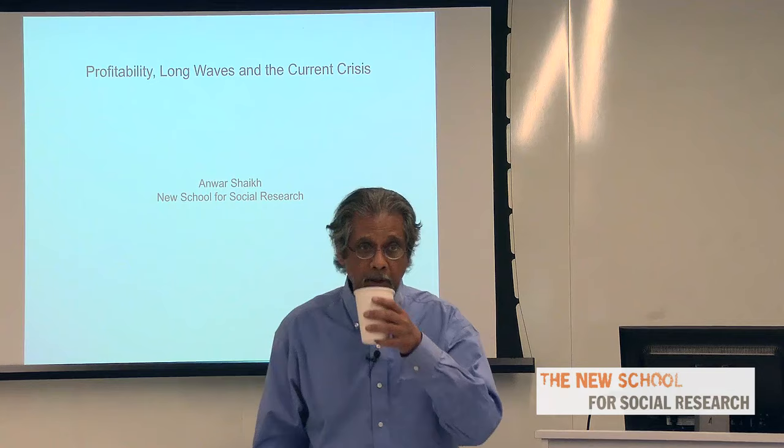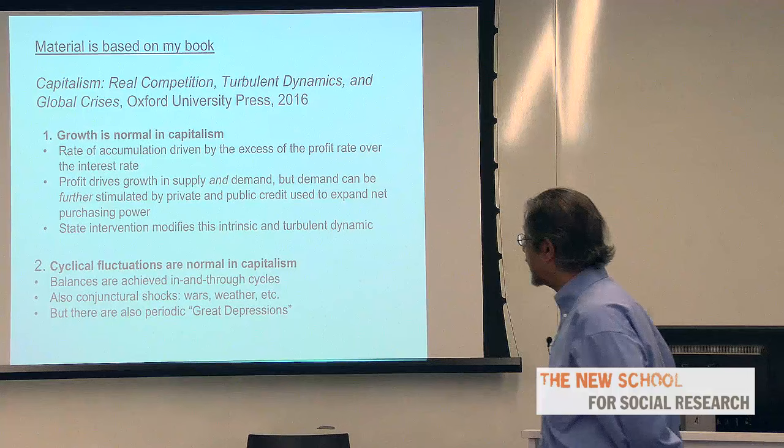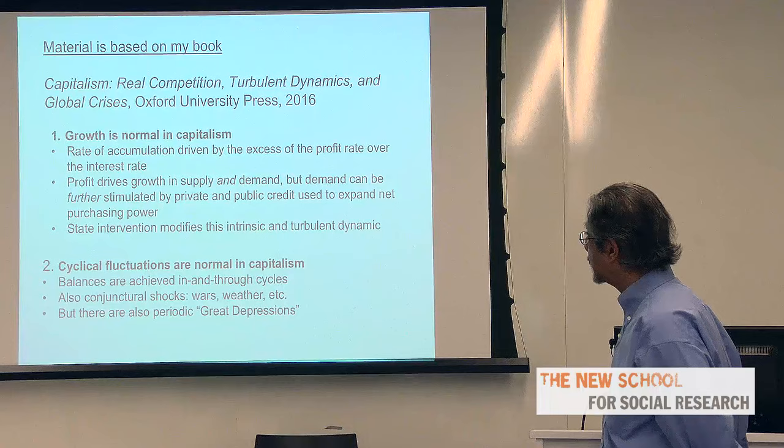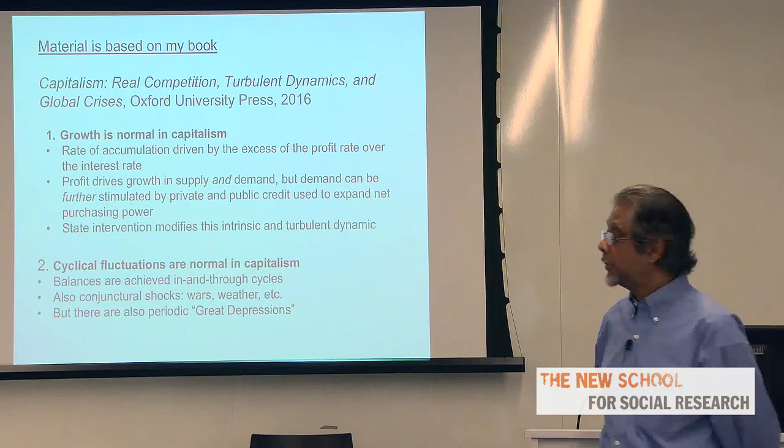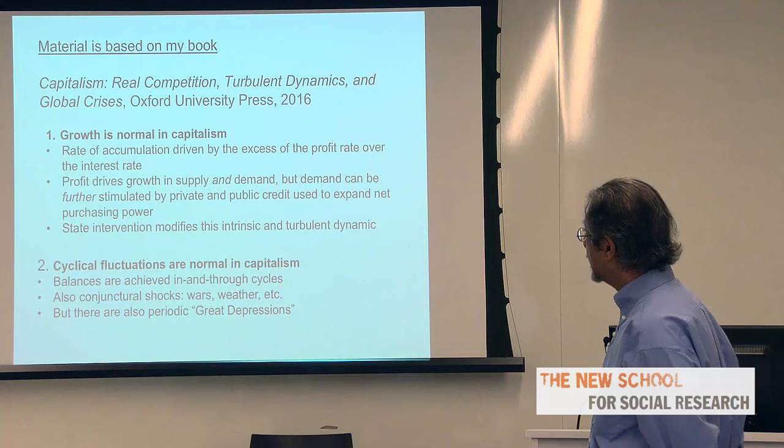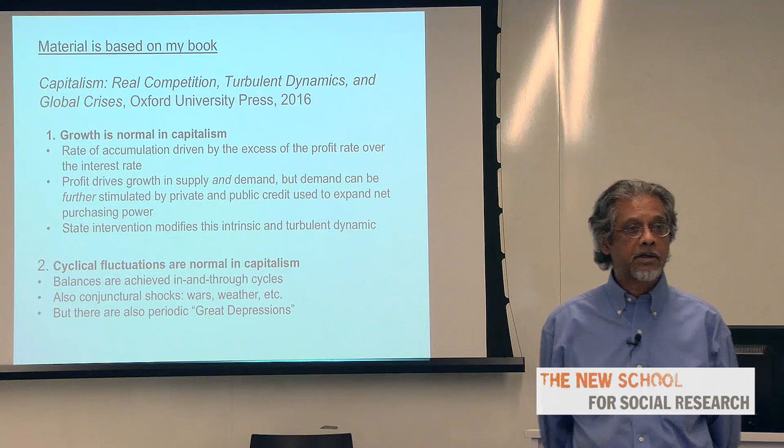Key elements of the argument in my book. The first one is that growth is normal in advanced capitalism. We're talking about advanced capitalism here — it doesn't follow that capitalism which fails is going to grow. But growth is normal in successful, advanced capitalism.